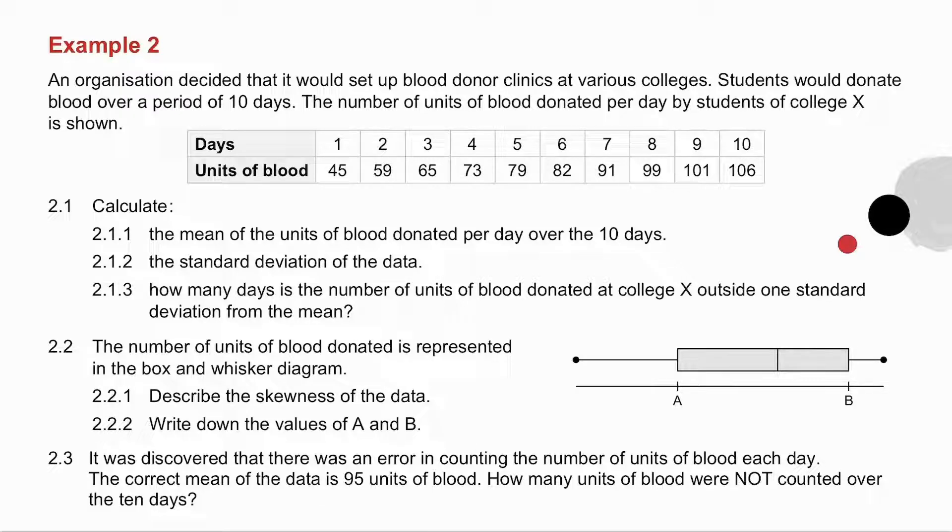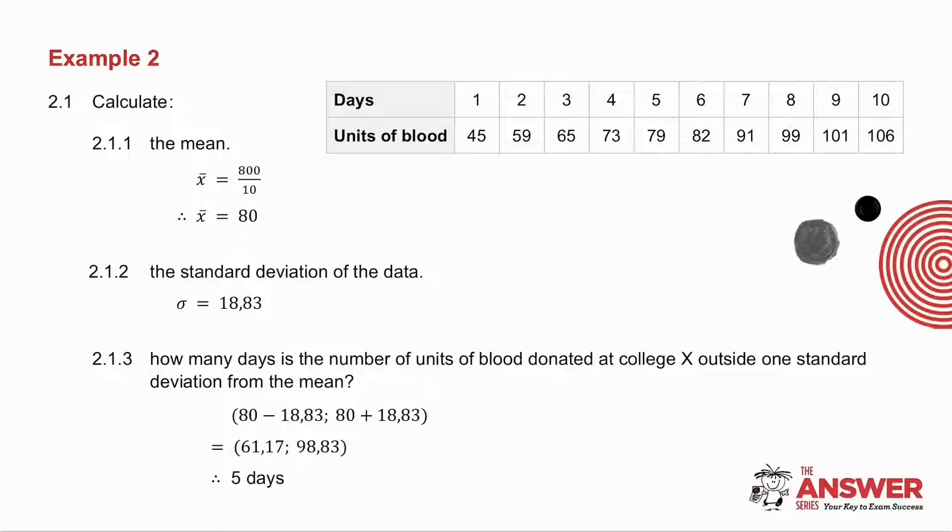Example number 2. I want you to pause the video, try this yourself, and then we'll do it together. The first question is to calculate the mean. Add up all the values, divide by 10, and you get the mean. The standard deviation, use your calculator, and you get it there.